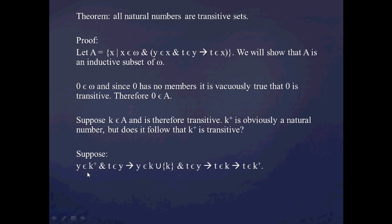To show that K+ is transitive, we're going to start with the premise: if Y is in K+ and T is in Y, we want to show that T is in K+. It follows that Y is in K union the set containing K, because this is just the definition of K+. And I've carried over the statement that T is in Y.